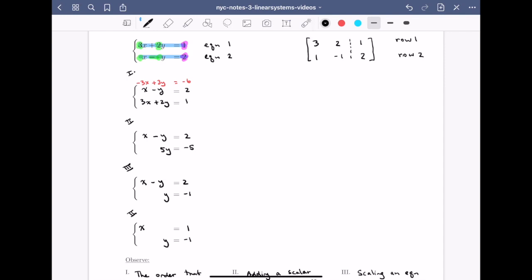So back to the operations that we did on the left-hand side, the first thing that we did is that we swapped equation 1 and equation 2. Here I can swap row 1 and row 2. So I'll rewrite the matrix as 1, minus 1, 2, and 3, 2, 1.